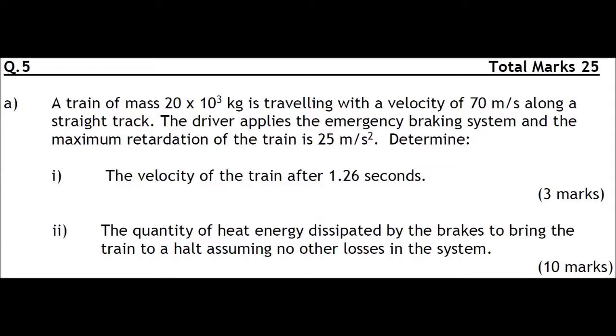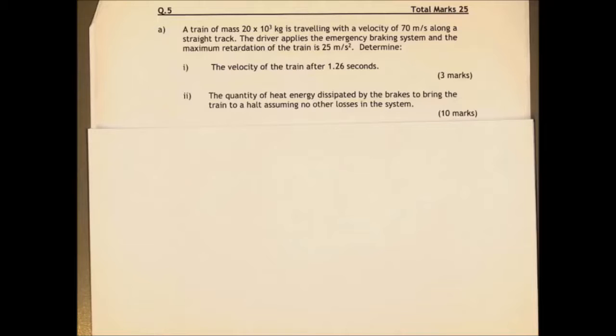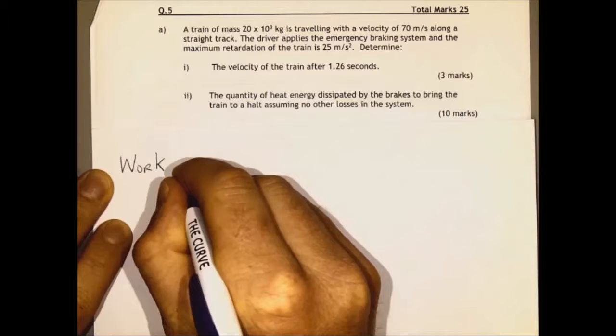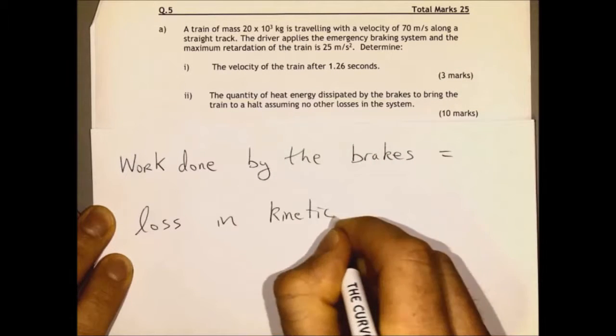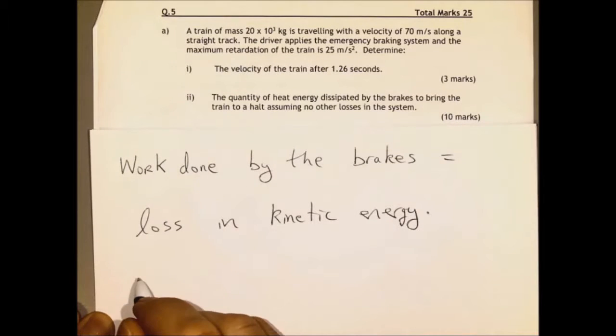Well, the key here is that the work done by the brakes equals the loss in kinetic energy. And the train had the kinetic energy of half mv squared before the brakes were applied. So we use that formula, half mv squared.